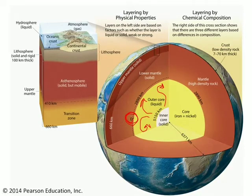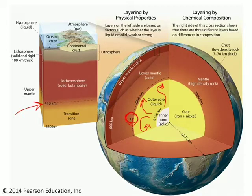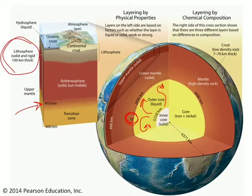But if you focus on the upper mantle, you'll see that above around 410 kilometers of depth, you have a layer of the mantle called the asthenosphere, which is solid but mobile. It moves around a lot — it's relatively weak. And then overlying the asthenosphere is the lithosphere. Notice that the lithosphere includes the uppermost part of the mantle as well as the crust.